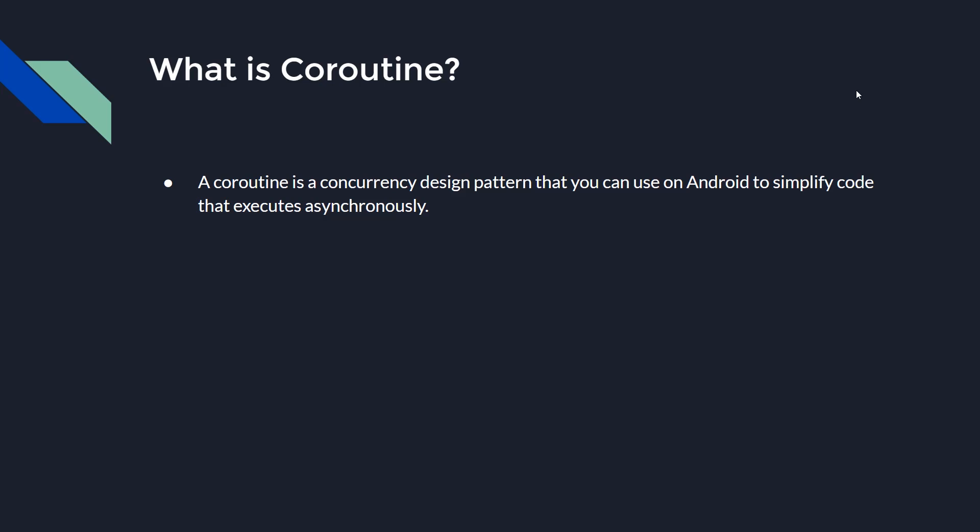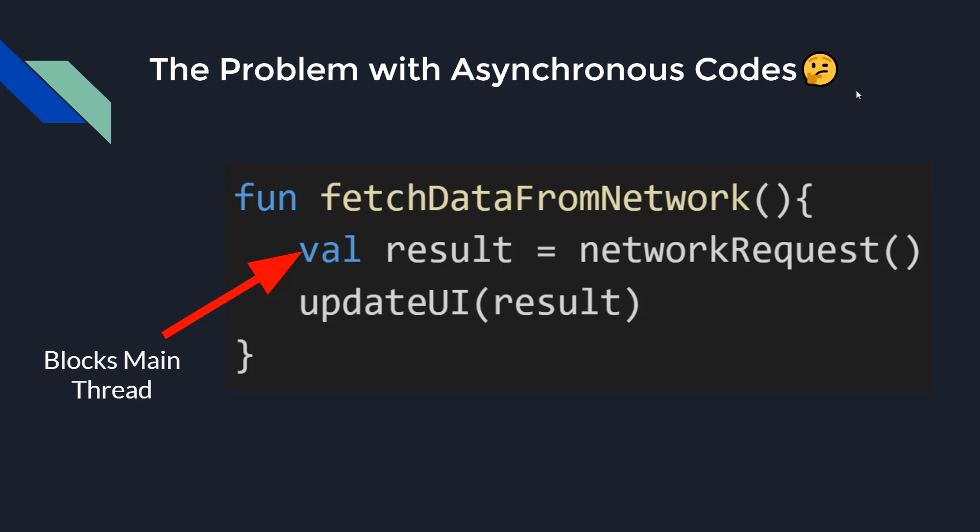But before going to coroutines, let's see the problem with asynchronous codes in Android. Assume we have a function that fetches data from an API and displays it on the UI. You may write something like this — here the network request is a blocking function as it will perform a network request that takes time. So what will happen is your application will crash, because the code is synchronously written in the main thread and Android does not allow network operations in the main thread because it blocks the UI and leads to non-responsive applications.